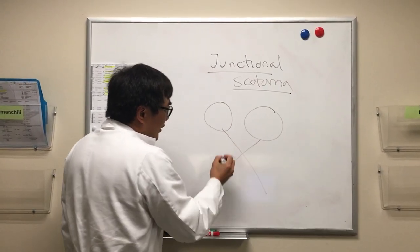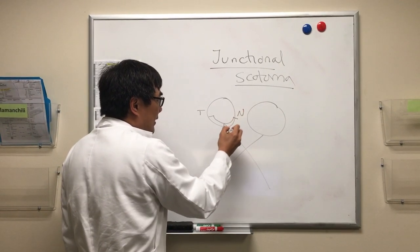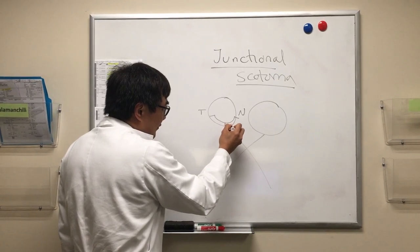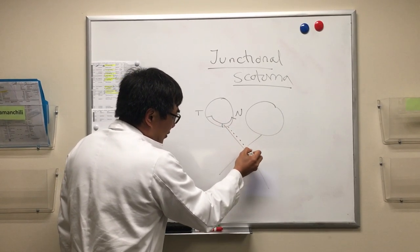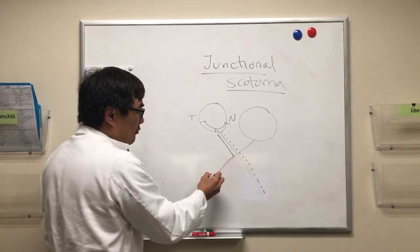So the fibers from the retina, both the temporal retina and the nasal retina, travel in the optic nerve. The nasal fiber, represented by this dotted line, crosses, but the temporal fiber remains uncrossed.